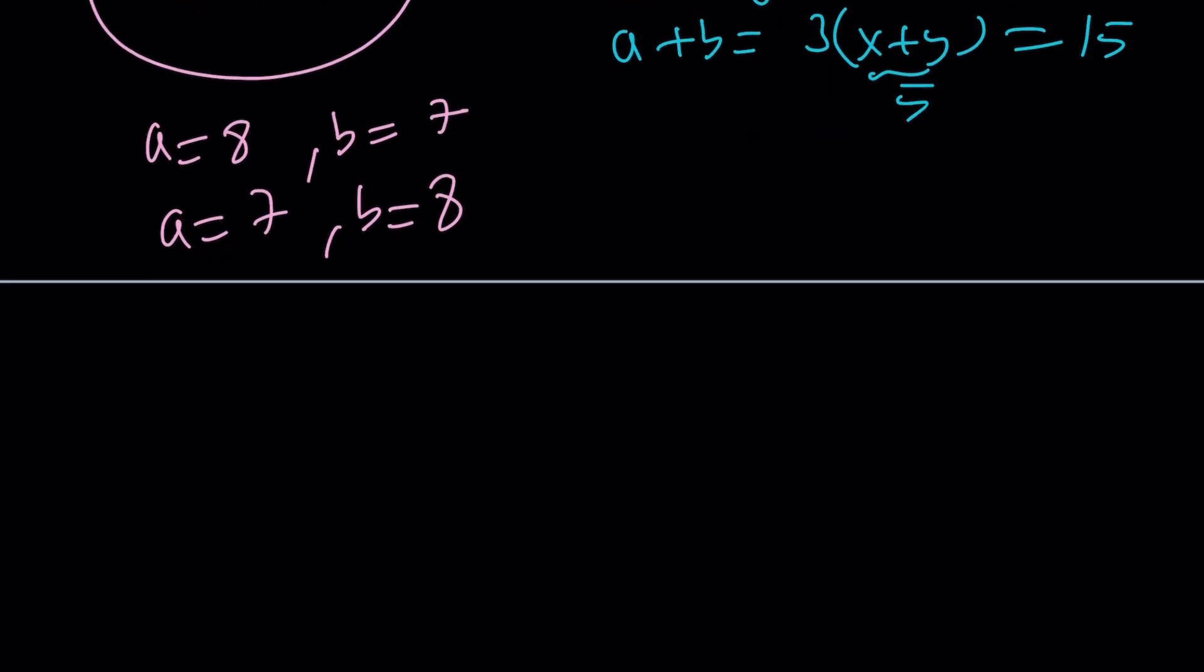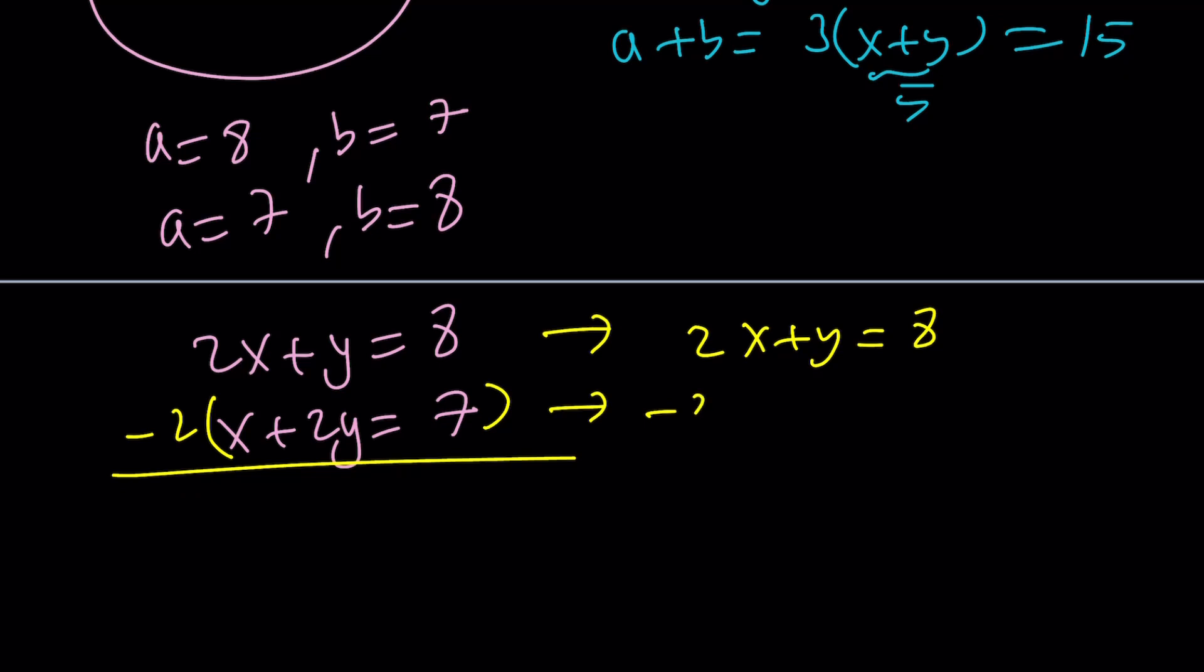But what does that mean? A equals 8 implies 2x + y is equal to 8, and x + 2y is equal to 7. If you go ahead and solve this system, I could multiply the second equation by negative 2. I can just copy this.